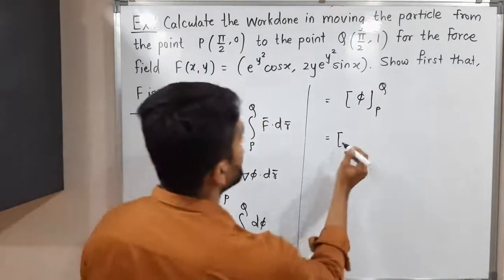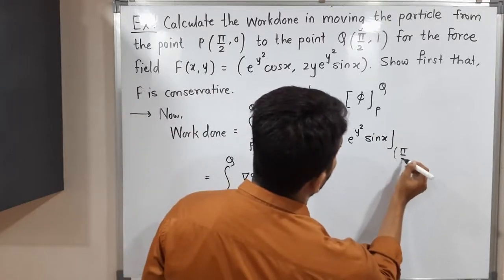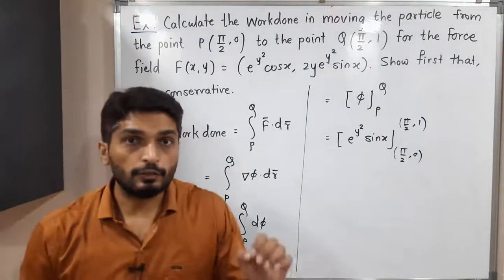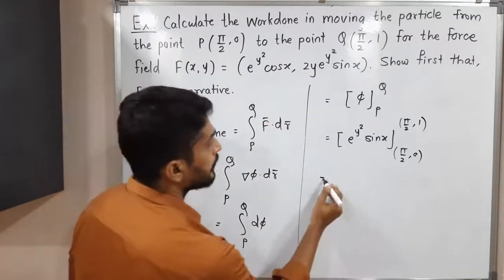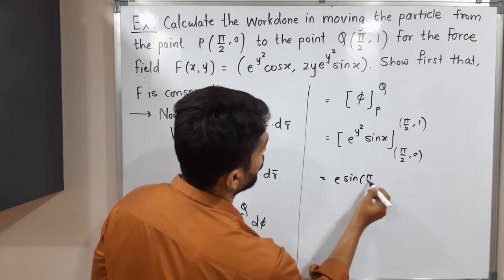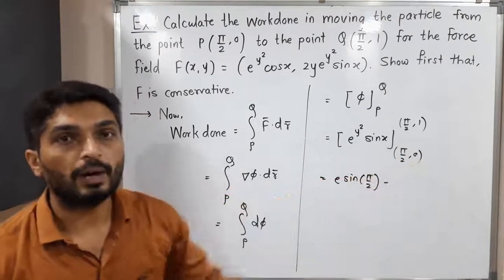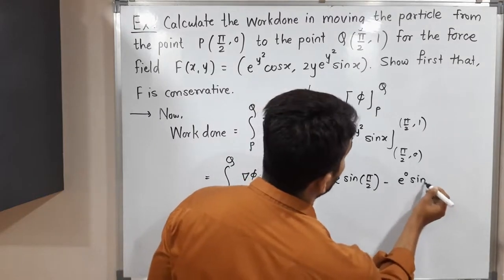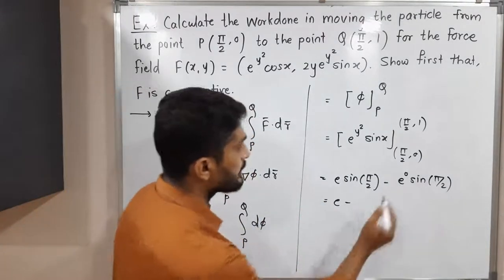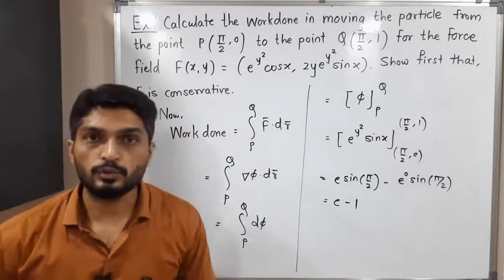Phi equals e^(Y²)·sinX. Point P is (π/2, 0) and point Q is (π/2, 1). Putting the upper limit first: X = π/2, Y = 1 gives e^1·sin(π/2). Then the lower limit: X = π/2, Y = 0 gives e^0·sin(π/2). Since sin(π/2) = 1, we get e·1 minus 1·1, so the work done is e − 1.